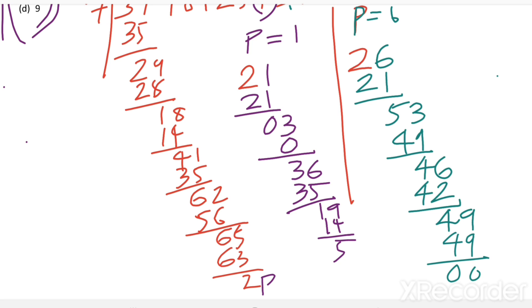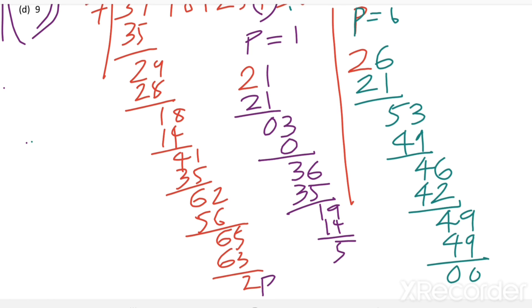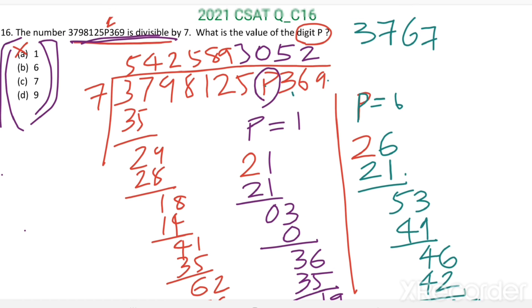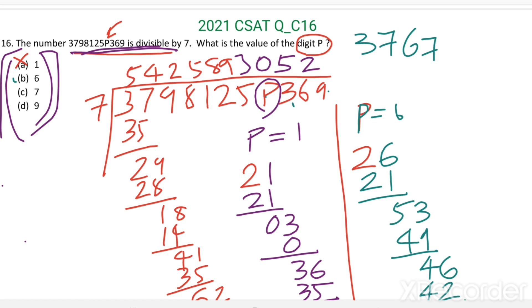When P equal to 6, we are getting remainder equal to 0. That means, when P equal to 6, this number is exactly divisible by 7. So this will be our answer. P equal to 6.